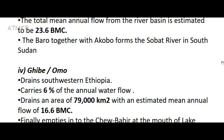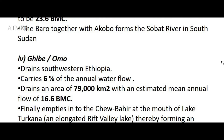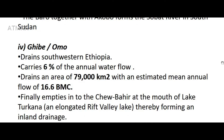The Gibe/Omo River drains southwestern Ethiopia, carries 6% of the annual water flow, and drains an area of 79,000 square kilometers with an estimated mean annual flow of 16.6 BCM. It finally empties into the Chuba/Arat, the mouth of Lake Turkana, an elongated rift valley lake, thereby forming an inland drainage.